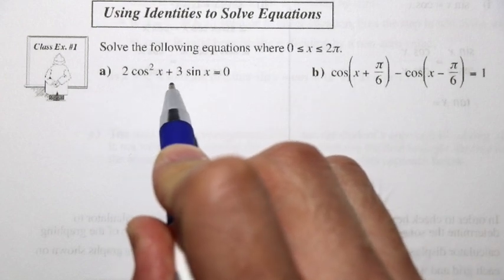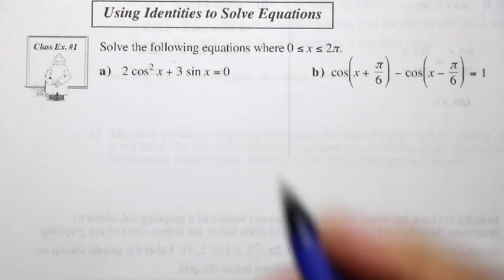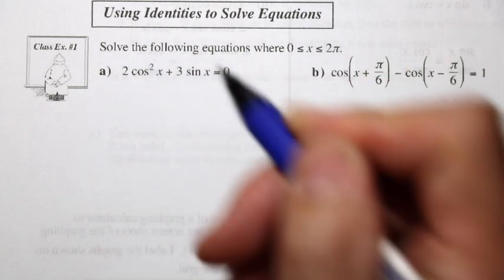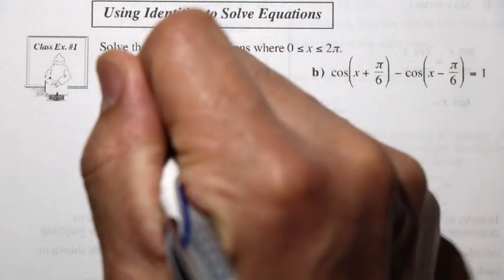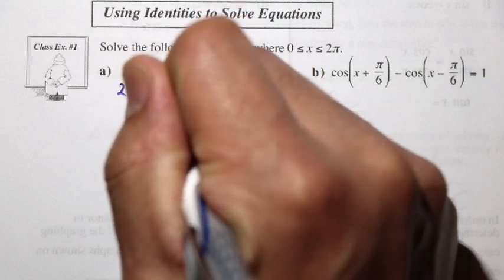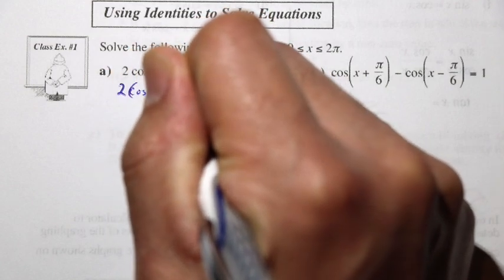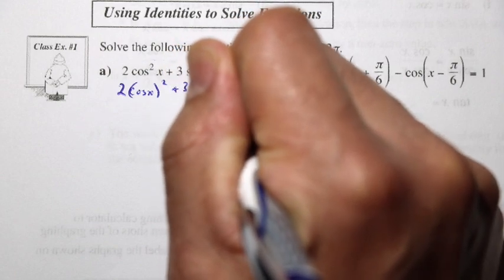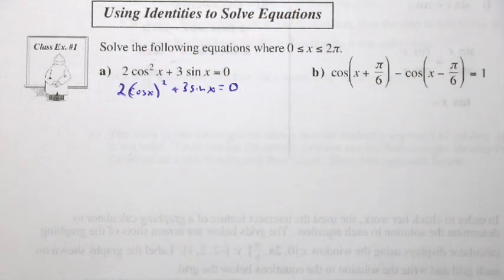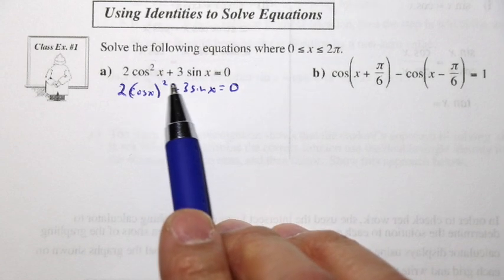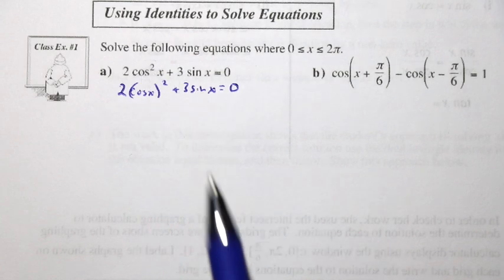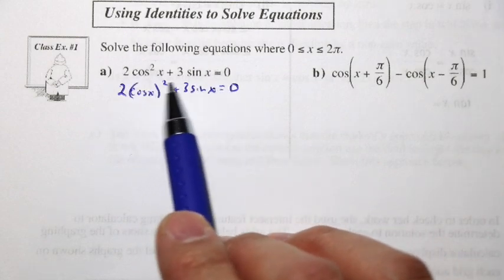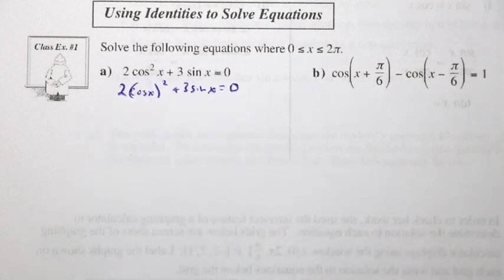We have 2cos²x + 3sin x = 0. This is a second-order equation — we can see this squared here. cos²x means cosine of x all squared. We have cosine here and sine, so is there a way to get everything in terms of either sine or cosine?